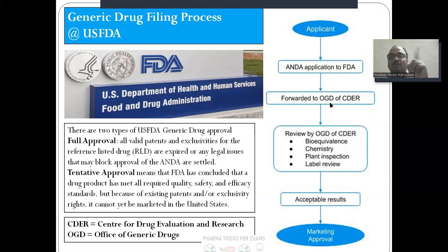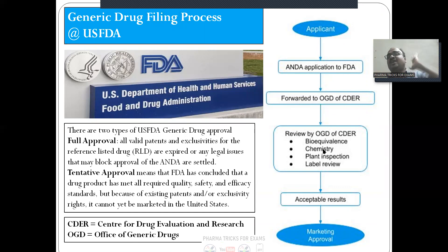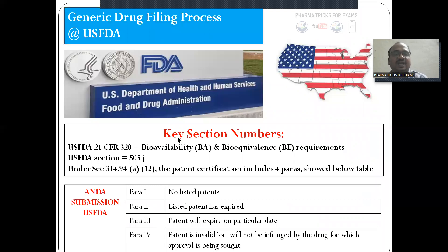For USFDA filing, the ANDA application is submitted to the FDA (Food and Drug Administration), forwarded to the OGD — Office of Generic Drugs — under CDER (Center for Drug Evaluation and Research). Review by OGD focuses heavily on bioequivalence studies, and finally marketing approval is granted.